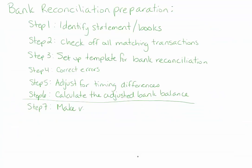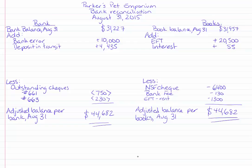Step seven — and note that the question might not always ask you to do this — is to make journal entries from the bank reconciliation. All of the reconciling items on the bank side have already been recorded in the books, so we don't record them again. However, the reconciling items on the book side are items recorded in the bank statement but not yet in the books. So in order for them to get into our accounting records, we have to make journal entries. There should be a journal entry for each item on the book side, all dated August 31st, and all of the journal entries must include cash since we are reconciling the cash account.